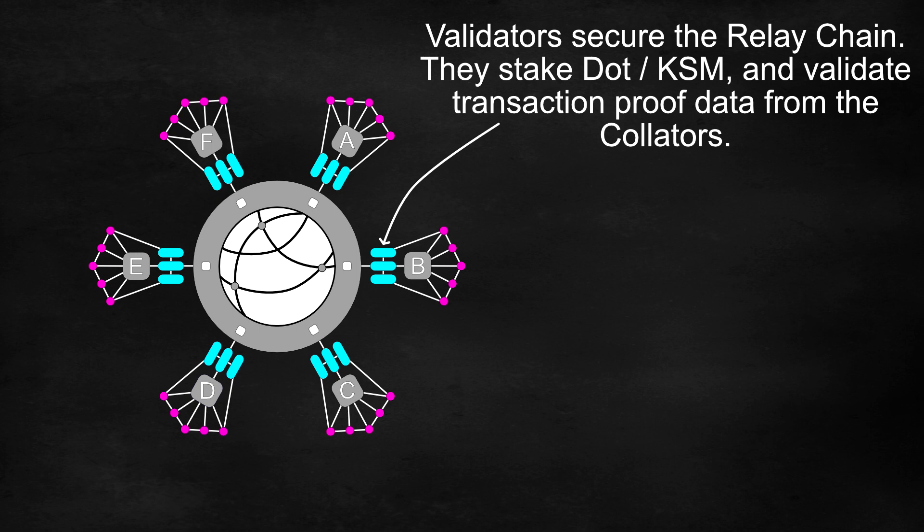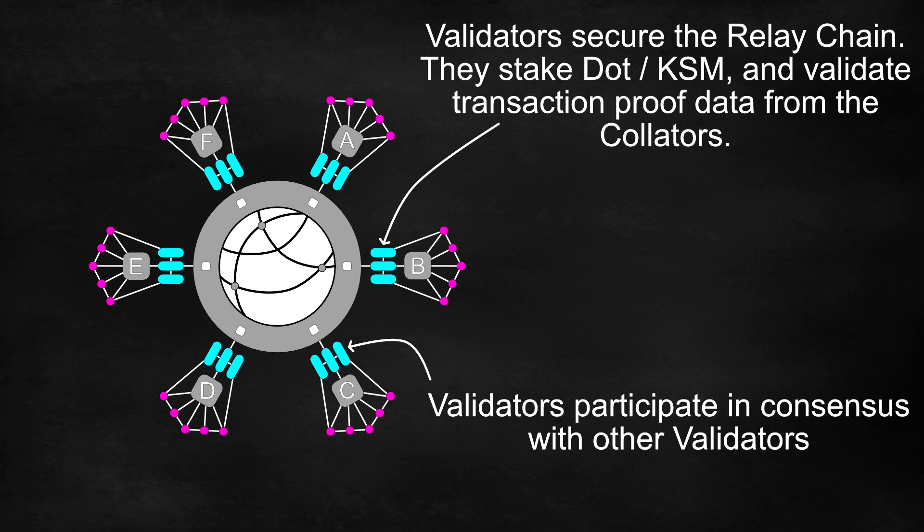Validators secure the relay chain by staking either DOT or KSM tokens. And they validate the transaction proofs from the collators and participate in consensus with other validators.